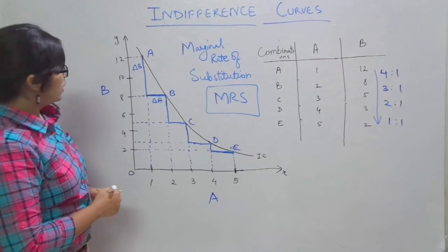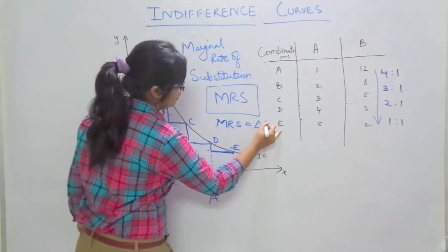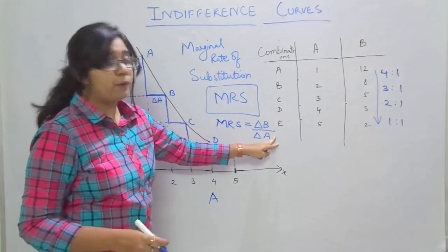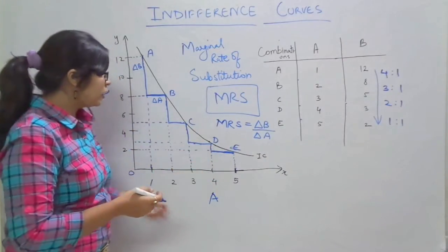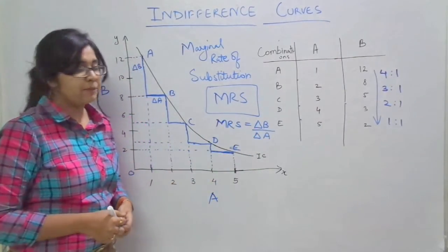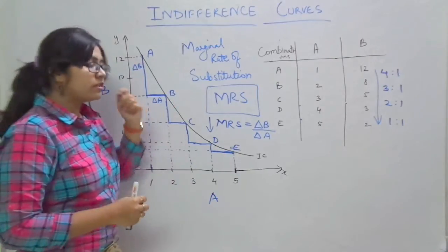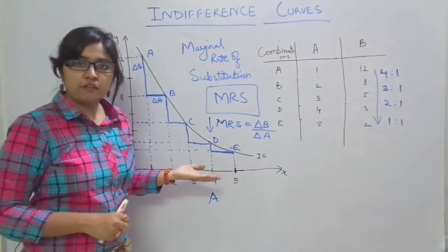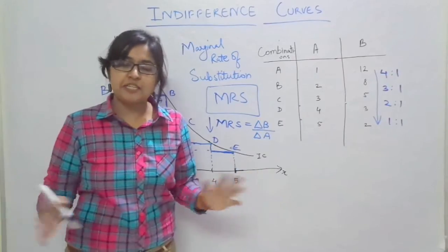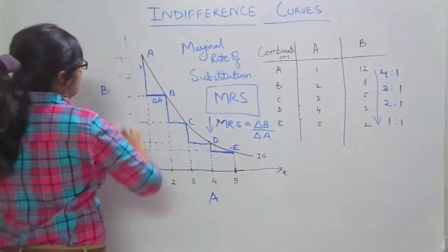MRS equals change in B upon change in A (ΔB/ΔA), or change in Y upon change in X. This will always decline. We have covered the major concept of marginal rate of substitution in indifference curve theory, which is also one major property. Now let's move on to the five properties of indifference curves.